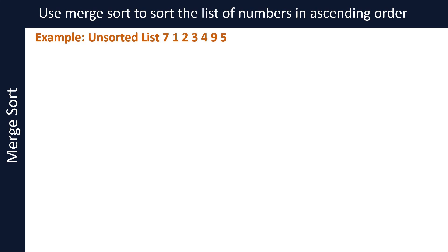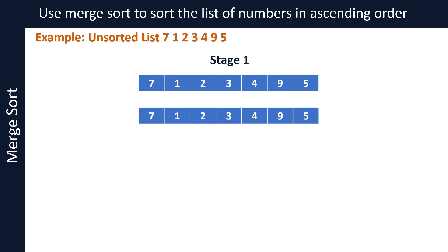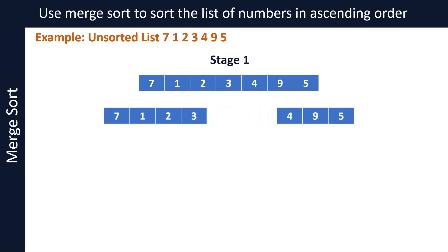As mentioned earlier, merge sort algorithm has two stages. In the first stage, we will repeatedly divide the list into smaller sublists. Let's divide the list into two sublists as you can see on the screen. The first sublist has numbers seven, one, two, and three, and the second sublist has numbers four, nine, and five.